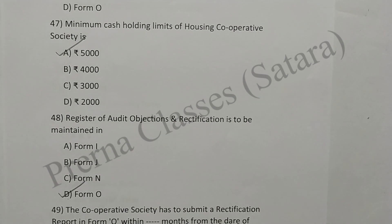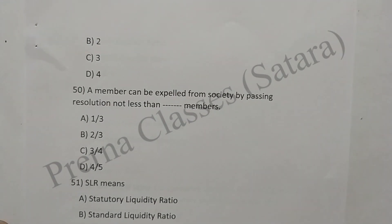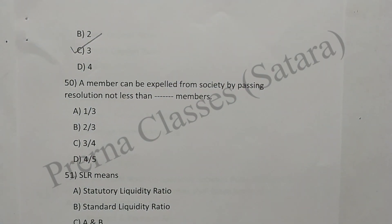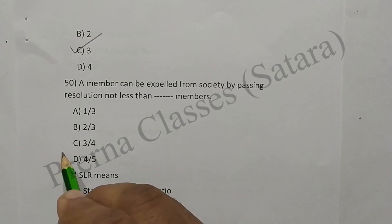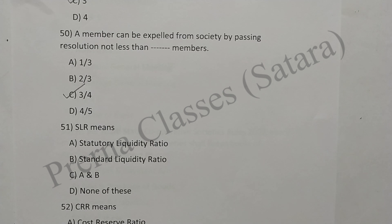Question 48: Register of audit objection and sign verification is to be maintained in Form O. Option D is correct. Question 49: A cooperative society has to submit a rectification report in Form O within — options are one month, two months, three months, four months — Option C (three months) is correct. Question 50: A member can be expelled from the society by passing a resolution by not less than three-fourths of members. Option C is correct.